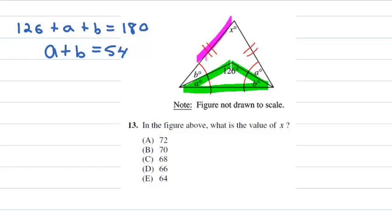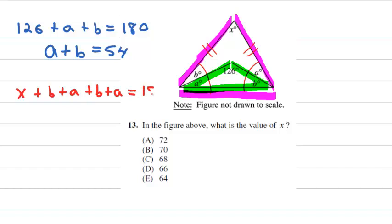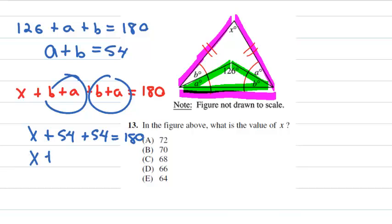When I turn my attention to the bigger outer triangle, I can write the sentence that adds up to 180 there. I can say that X plus the lower left angle, B plus A, plus the lower right angle, B plus A, equals 180. Now, because I know that A plus B is 54, each of these sets here are both equal to 54. So, X plus 54 plus 54 equals 180. Combine like terms, X plus 108 equals 180. Take away 108 from both sides and X equals 72. So, the correct answer for this problem would be A, 72.